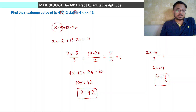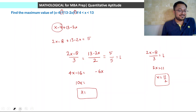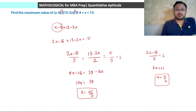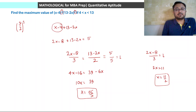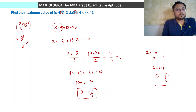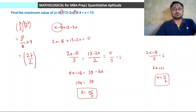At x equals 11 by 2, substituting into the original expression: (11 by 2 minus 4)³ into (13 minus 2 times 11 by 2)² equals (3 by 2)³ into (13 minus 11)² equals (3 by 2)³ into 4 equals 27 by 8 into 4 equals 27 by 2. So the maximum value of the expression is 27 by 2.